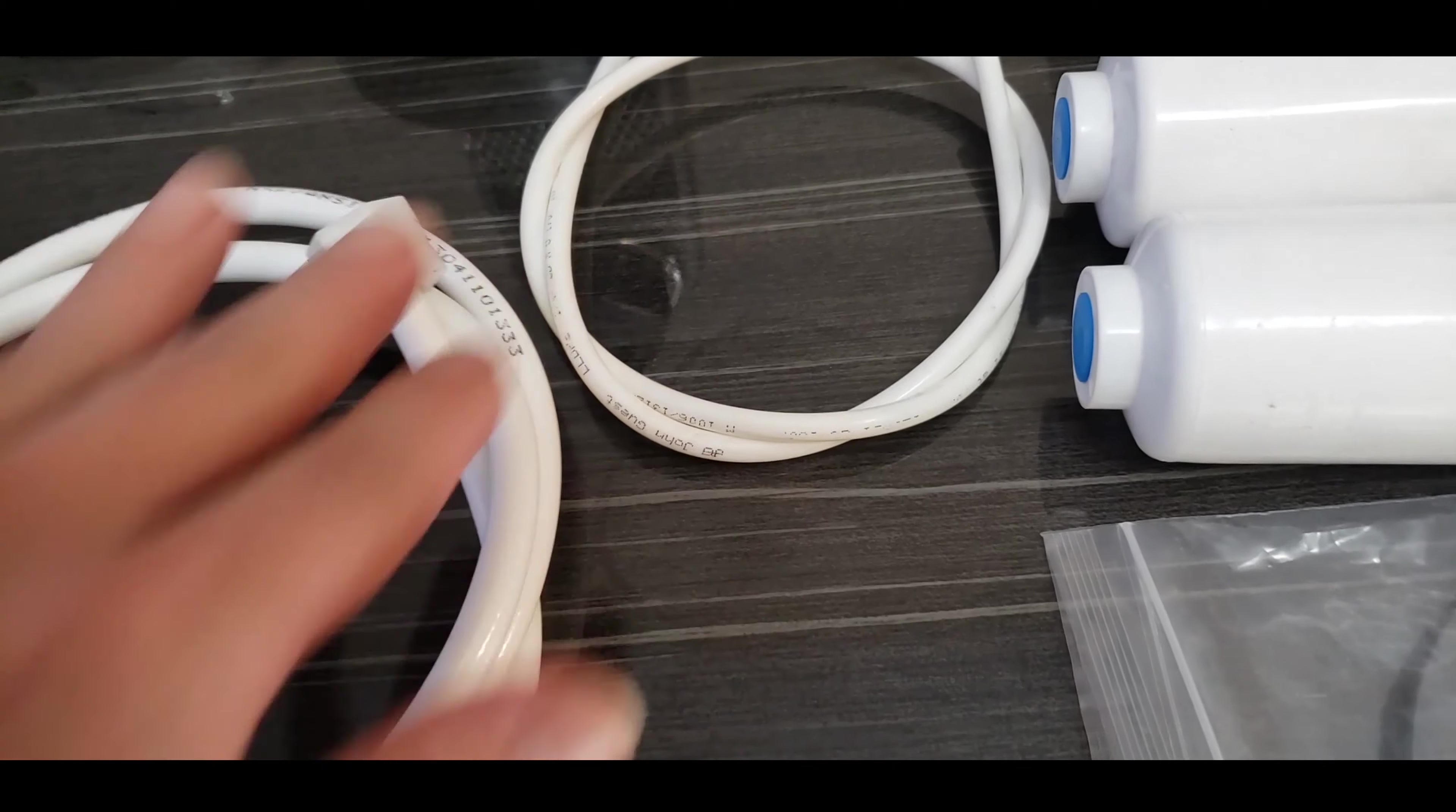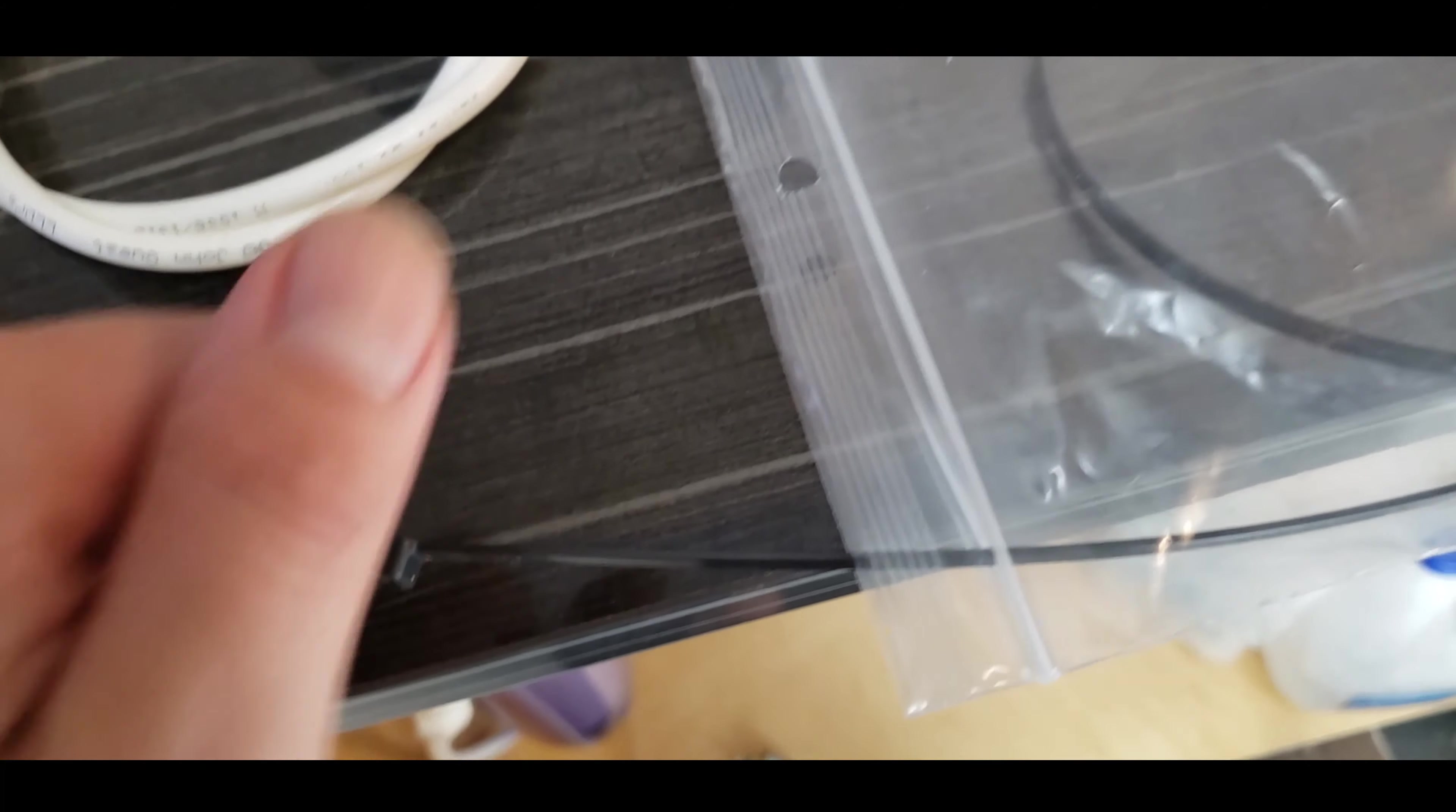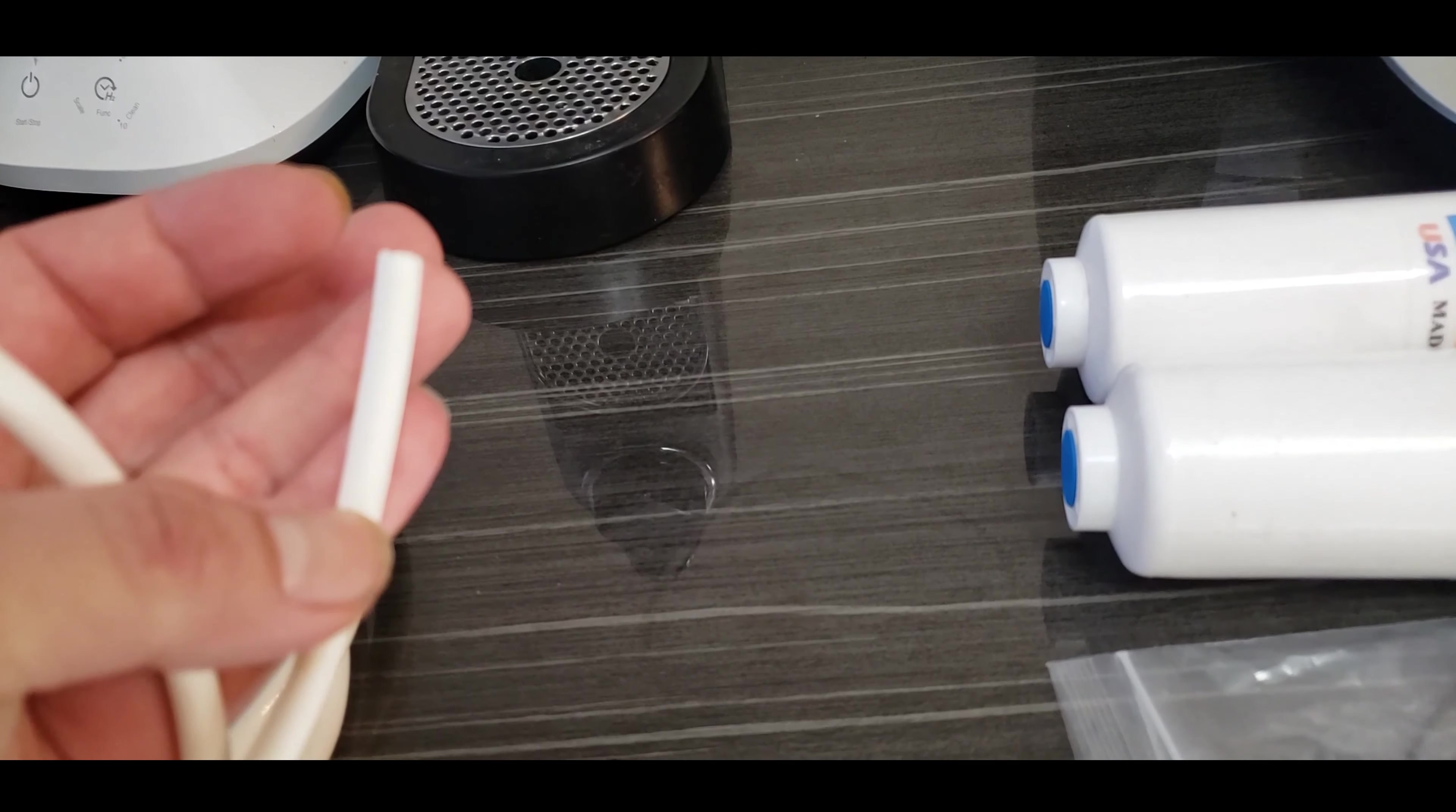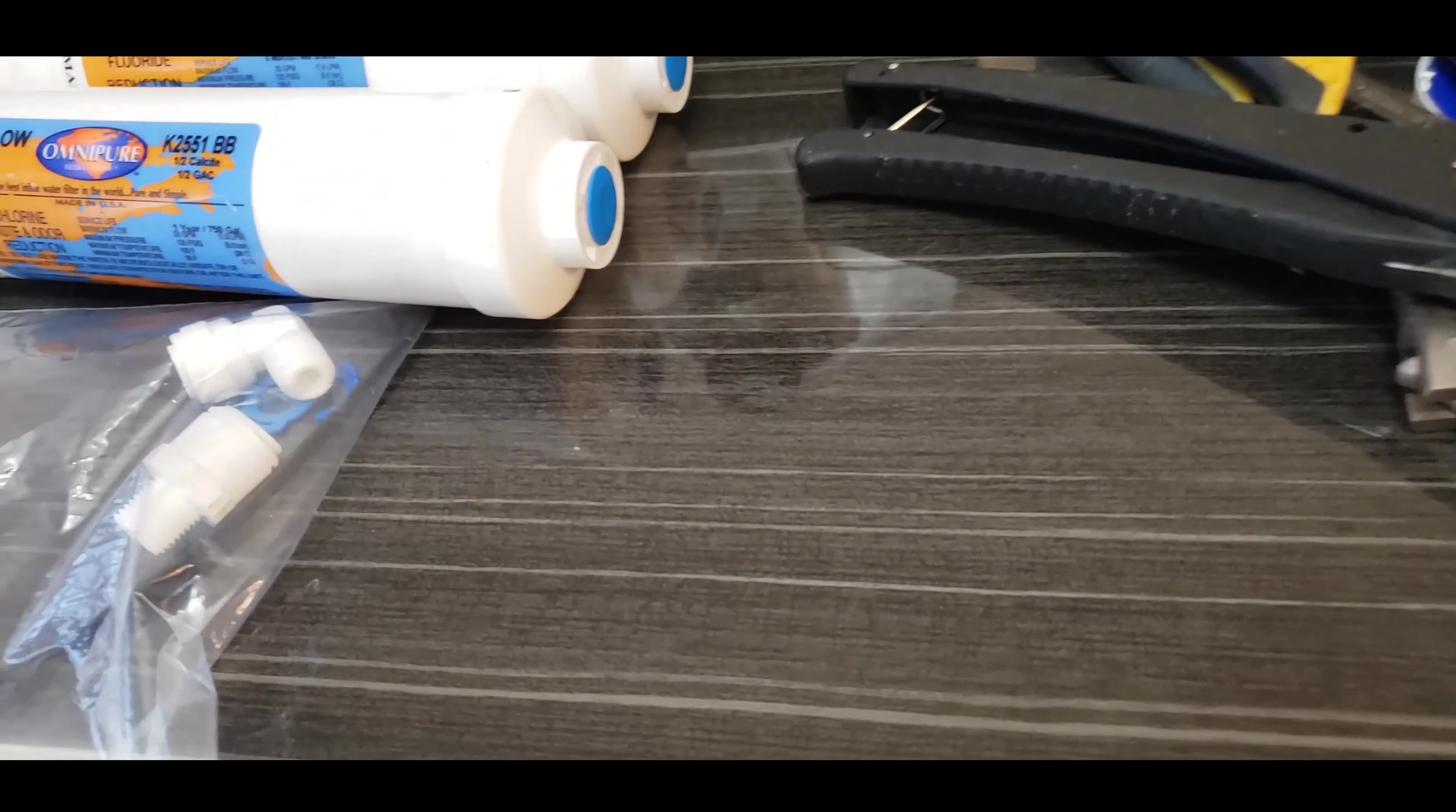with either one of these hoses. This is a three-eighths inch hose and this is a quarter inch hose. The difference is: you take your pinky, and if you put it over the tube and it's almost the same size, that's three-eighths. If you put it over this one, it's only about half the size of your pinky. So quarter inch is very small.